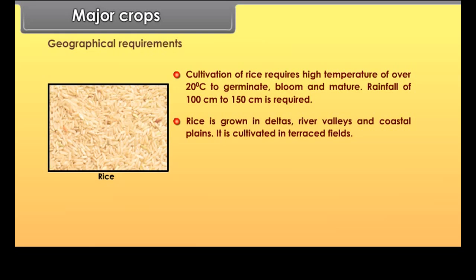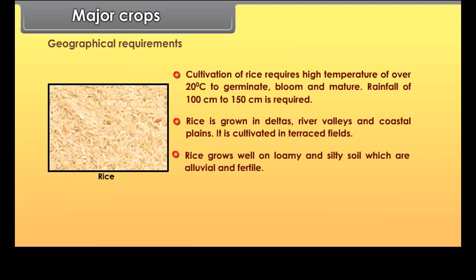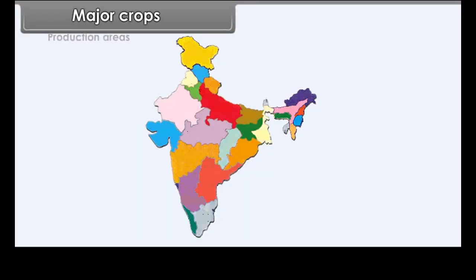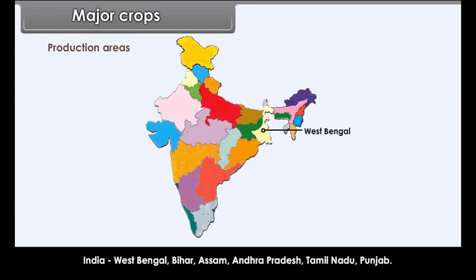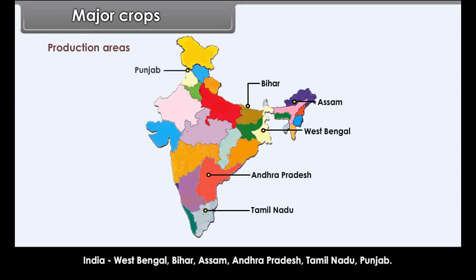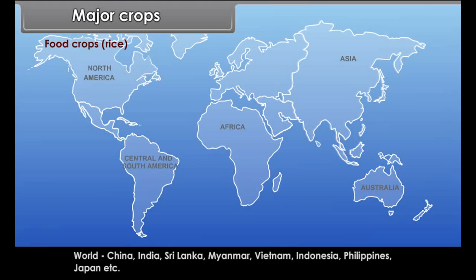Rice is grown in deltas, river valleys and coastal plains, cultivated in terraced fields. It grows well on loamy and silty alluvial and fertile soil. Production areas in India include West Bengal, Bihar, Assam, Andhra Pradesh, Tamil Nadu and Punjab. World producers include China, India, Sri Lanka, Myanmar, Vietnam, Indonesia, Philippines and Japan.